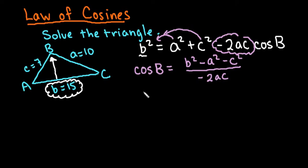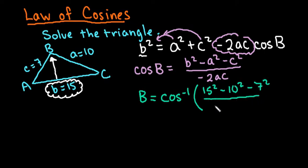So let's go ahead and plug in the information that we have to find angle b. And because we're finding an angle measure, we're really going to find the inverse cosine of this value here. So b squared is 15 squared minus a squared, which is 10 squared, minus c squared, which is 7 squared, all over negative two times 10 times 7.